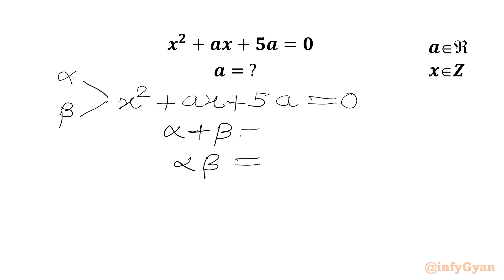Sum of roots equals minus of coefficient of x over coefficient of x squared, so I can write minus a. Product of roots will be equal to constant over coefficient of x squared, so I can write here 5a over 1, which is 5a.